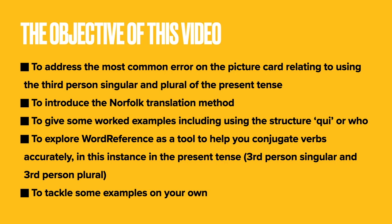The aim of this slideshow is to address the most common error on the picture card relating to using the third-person singular and plural in the present tense. It's also to introduce what I've dubbed the Norfolk Translation Method, more of that later. To give you some worked examples, including using the structure 'ki' or 'who' as a conjunction to join two things together, to explore Word Reference as a tool to conjugate verbs accurately — focusing on the present tense of third-person singular and plural — and to give you the opportunity to tackle some examples on your own to see whether you can learn the lessons articulated in this PowerPoint.